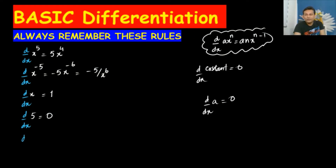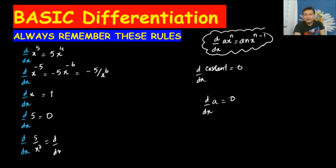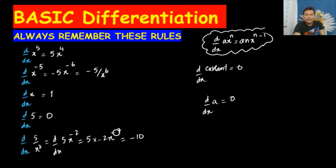Next, when we have a fraction like d/dx of 5 over x², we move the denominator up: 5/x² becomes 5·x to the power minus 2. Now applying the formula: the power minus 2 multiplied by 5 gives minus 10, and the new power is minus 2 minus 1, which is minus 3. So the answer is minus 10x to the power minus 3.